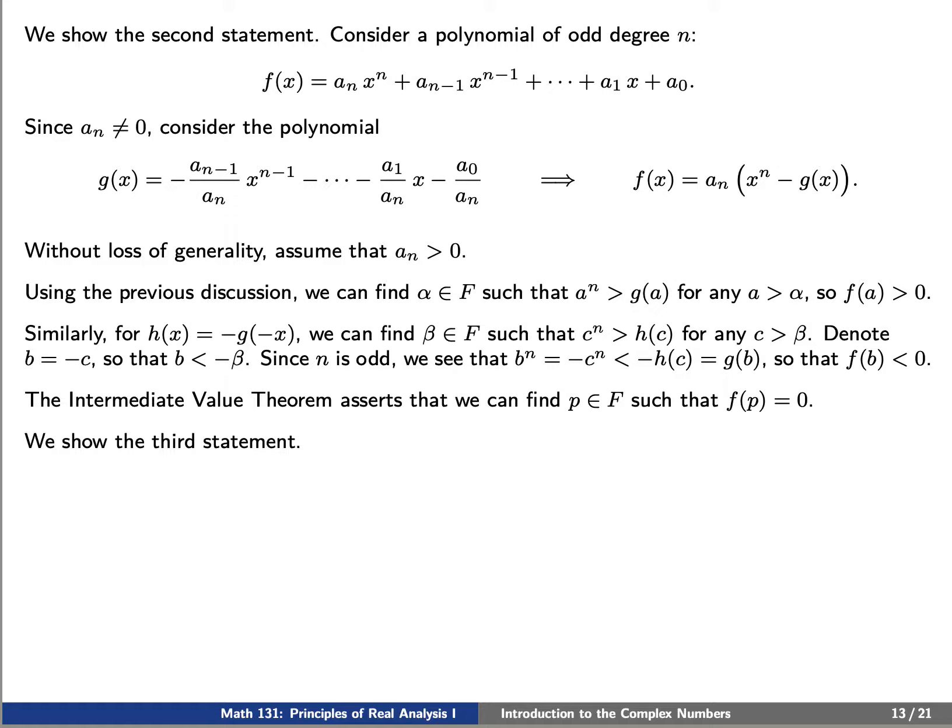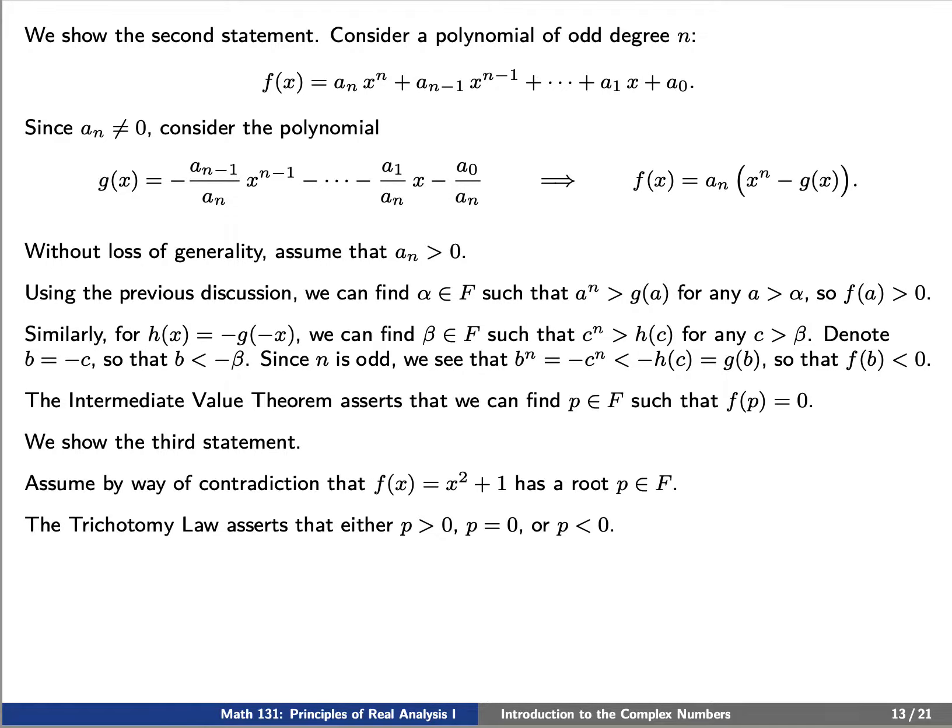We'll finally show the third statement. We want to show that there exists a polynomial of even degree that does not have a root p in f. Let's assume by way of contradiction that our polynomial f of x equals x squared plus 1 does have a root p. The trichotomy law asserts that either p is positive, p is 0, or p is negative.